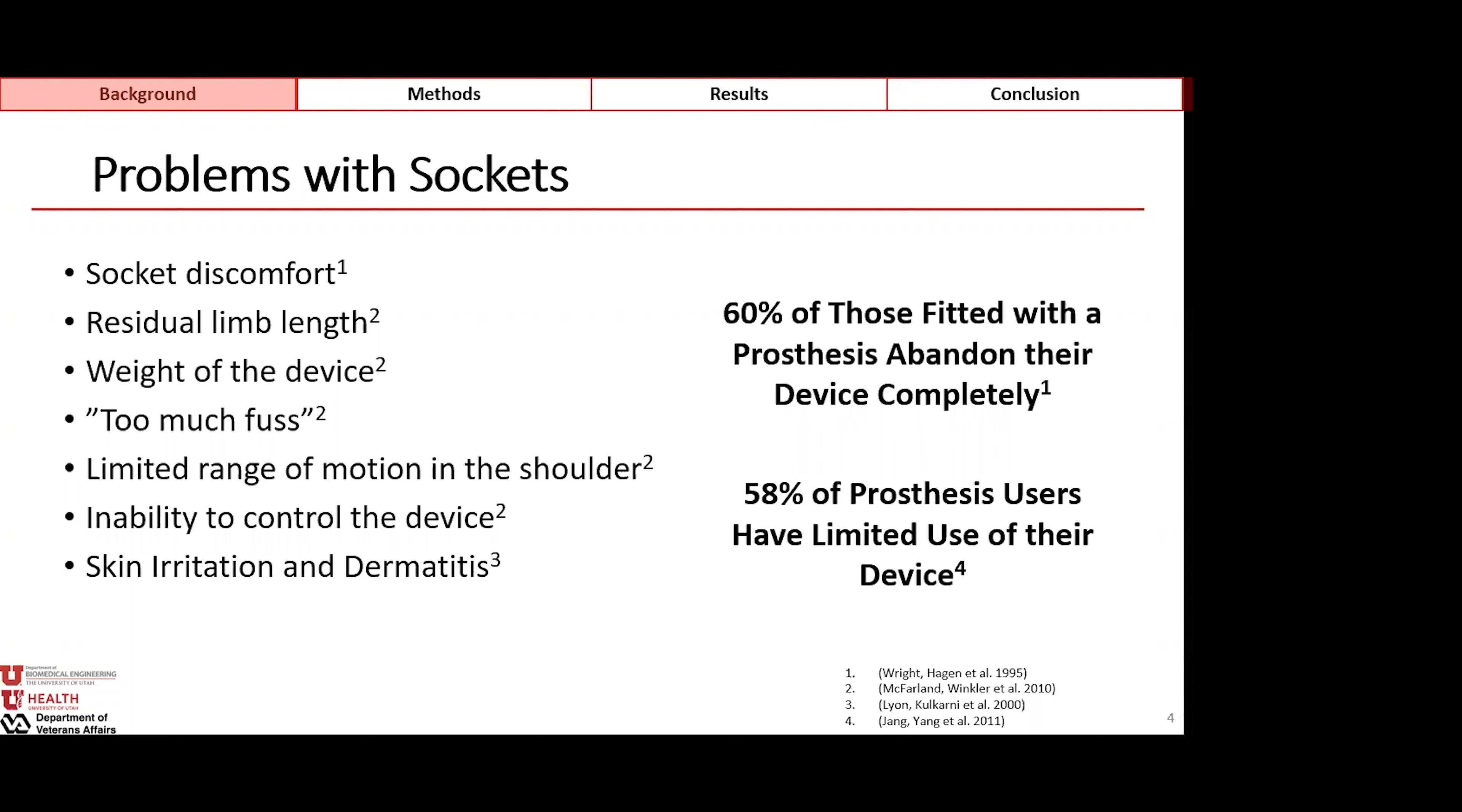Some of the problems that lead to abandonment are listed here on the left side of the screen, with the weight of the device being a primary issue, limited range of motion of the shoulder, the inability to control the device, or something as simple as irritation to the skin from the socket materials.